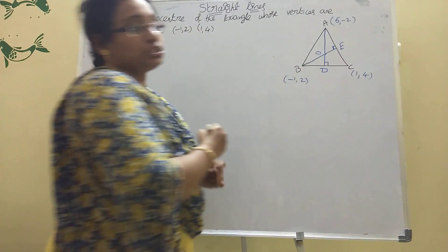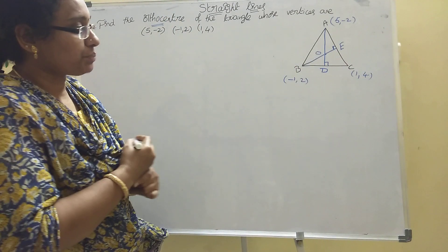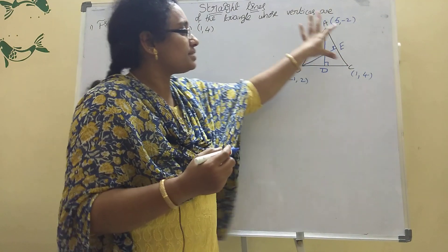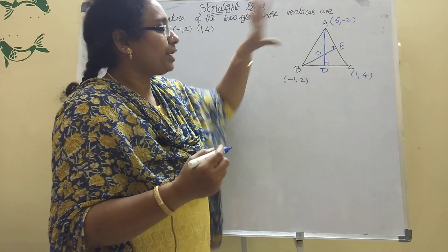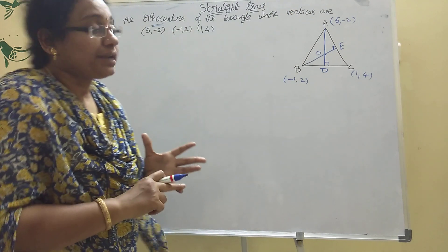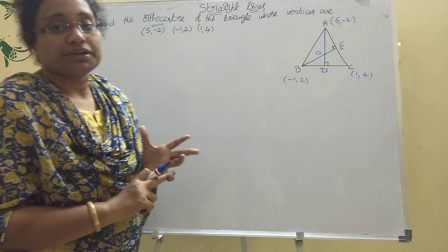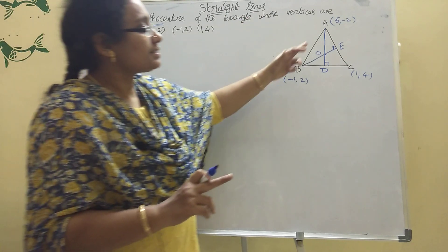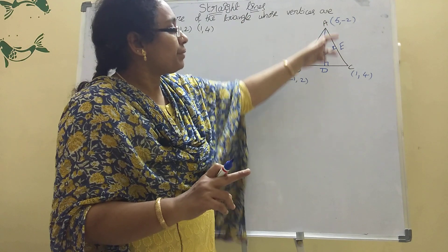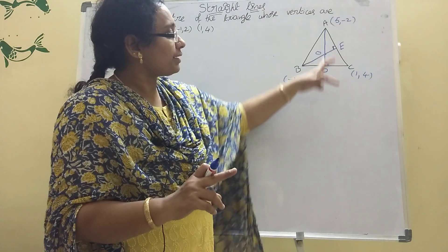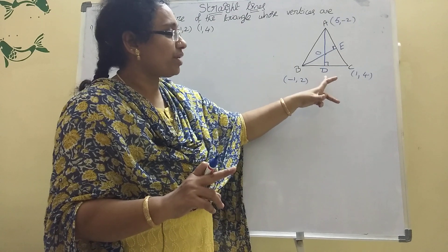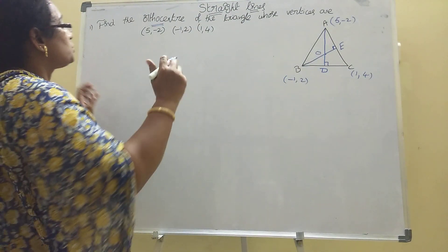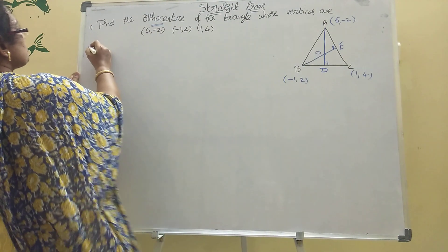The first step: take any two sides, BC or AC or AB. Find the slope using the slope formula, then find the perpendicular slope, then find the equation of the line.